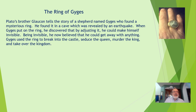The Ring of Gyges. Plato's brother Glaucon tells the story of a shepherd named Gyges who found a mysterious ring in a cave revealed by an earthquake. When Gyges put on the ring, he discovered that by adjusting it, he could make himself invisible. Being invisible, he now believed he could get away with anything. So Gyges used the ring to break into the castle, seduce the queen, murder the king, take over the kingdom — doing whatever he wanted because he was invisible.